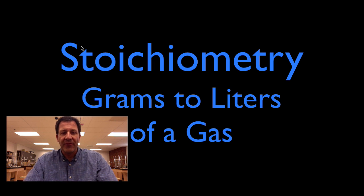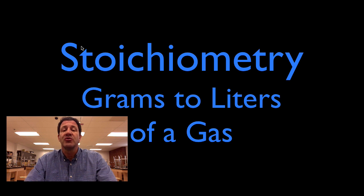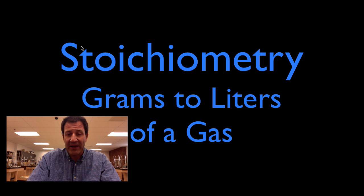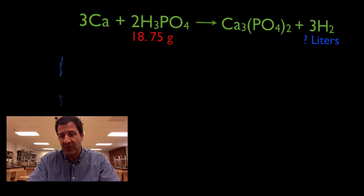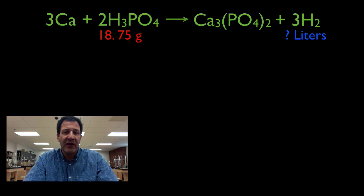In today's video, we're going to go through another in our series of stoichiometry videos. We're going to learn how to convert from grams to liters of a gas. We're going to start with a certain number of grams of one of our reactants and determine how many liters of gas we're going to produce.